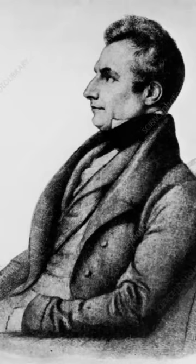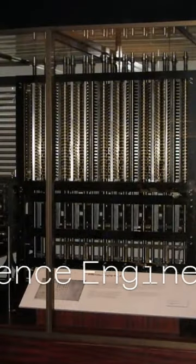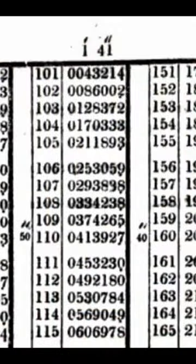Charles Babbage was born on December 26, 1791. In 1821, Babbage invented the difference engine to compile mathematical tables.